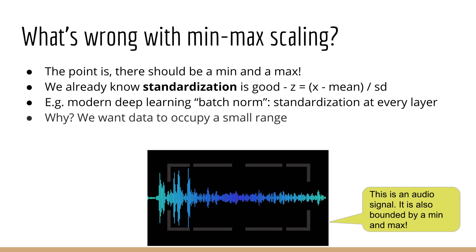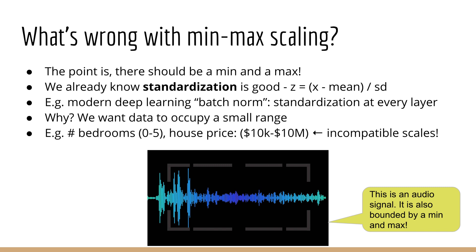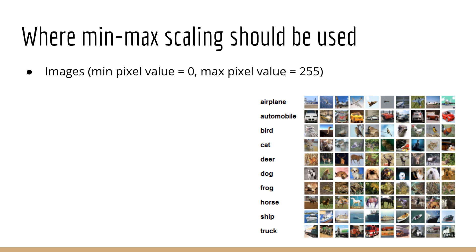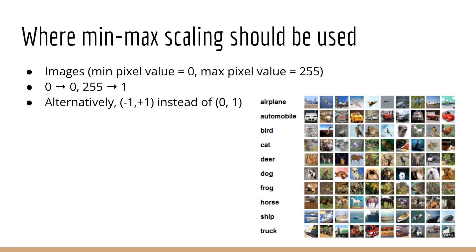Generally speaking, we want our data to occupy a small range of values. For example, if you're looking at house price data, you don't want the number of bedrooms to range from 0 to 5 and the price to range from 10,000 to 10 million — you want everything on the same scale and small. One example of where min-max scaling is appropriate is when you're working with images. Image pixel values have a fixed minimum and maximum: min is 0, max is 255. We can use min-max scaling to scale down the pixel values so that 0 goes to 0, 255 goes to 1, and anything less than 255 goes to a number between 0 and 1 proportionally.